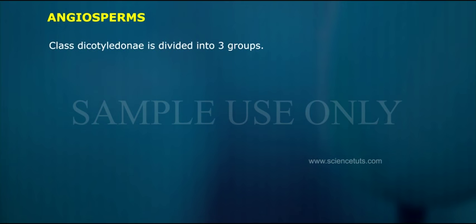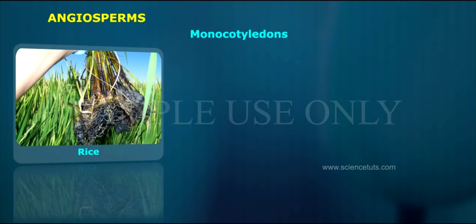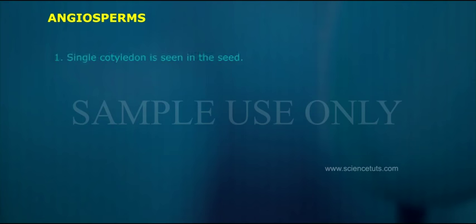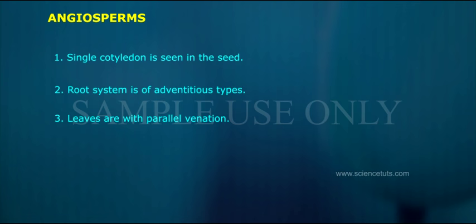Class dicotyledony is divided into three groups: polypetaly, gamopetaly, and monochlamydy. Monocotyledons — examples include rice, wheat, and sugarcane. Features: a single cotyledon is seen in the seed; the root system is of adventitious type; leaves have parallel venation; flowers are trimerous.